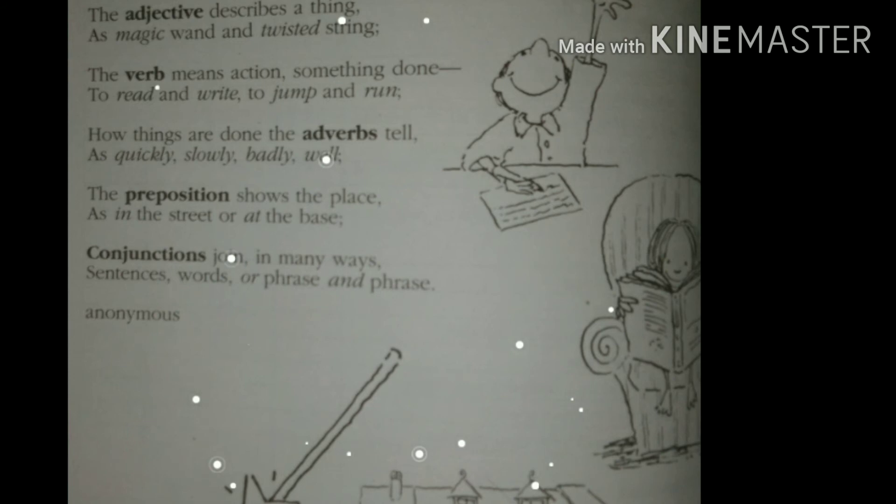Now move on to the next one, that is preposition. Here the word position can tell us very easily that it is about the place. As in the street or at the base. The in or at words used here, these are used to tell the place of something. These words are called preposition. So it's very clear with the preposition also.